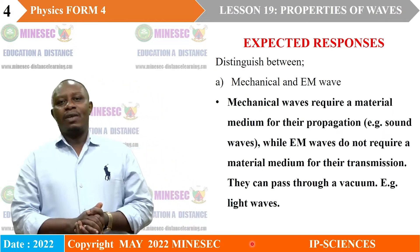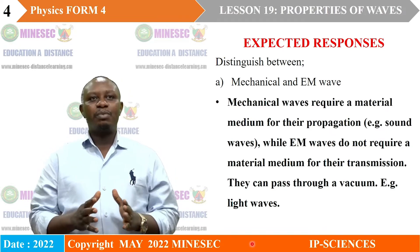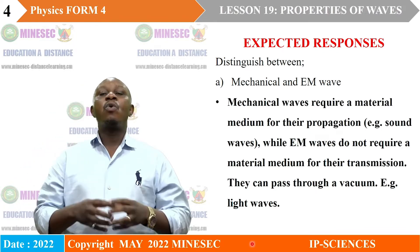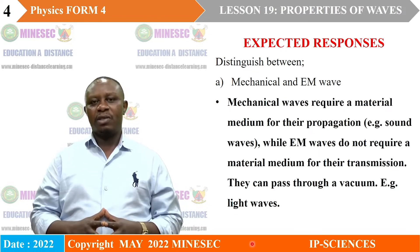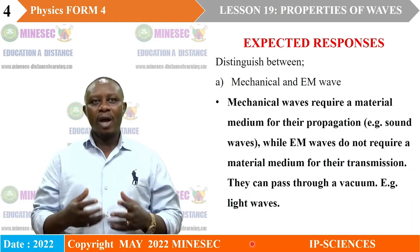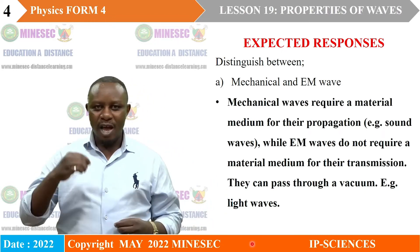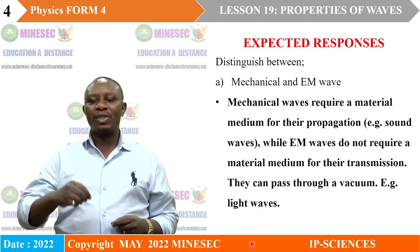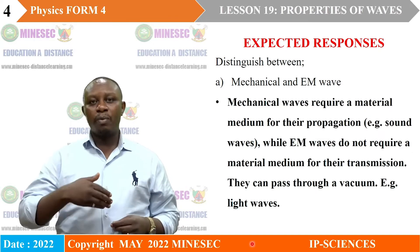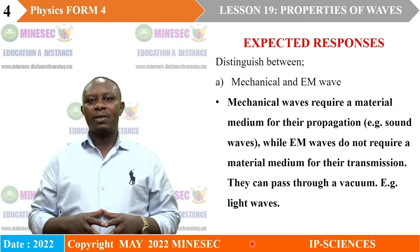I suppose you have your answers correct. For the first question, the difference between mechanical waves and electromagnetic waves is that mechanical waves require a material medium for their propagation — these are waves that need a material medium to pass through. Whereas electromagnetic waves do not require any material medium for their propagation.